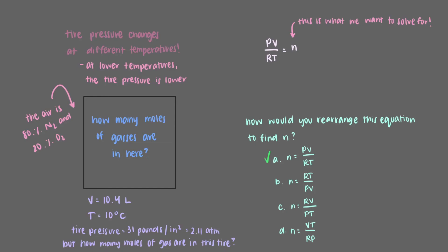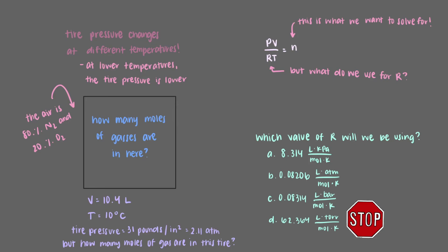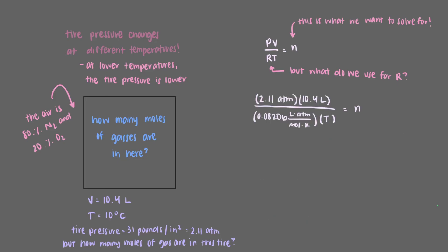We have all of the variables needed to solve for the number of moles of gas in the tire. We need to figure out which value of R to use though. We're given the pressure in units of atmospheres, so we need to use the R with the same unit: 0.08206 liters times atmospheres over moles times Kelvin. Now we can plug everything into the equation we rearranged. Keep in mind that we must convert the temperature in Celsius to Kelvin. 10 degrees Celsius is 283.15 Kelvin. Once we multiply and divide everything, we get that there are 0.944 moles of gas in our tire.